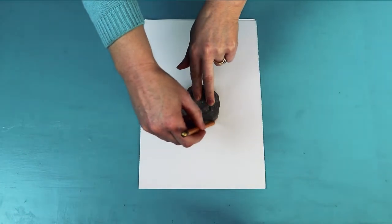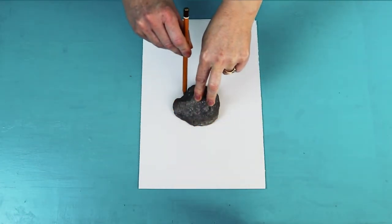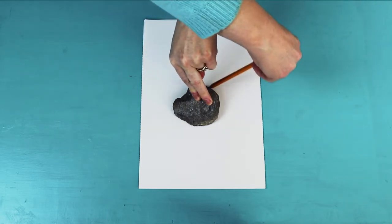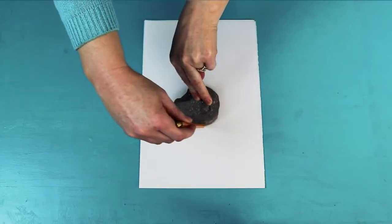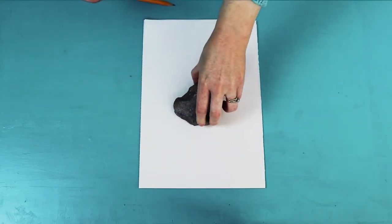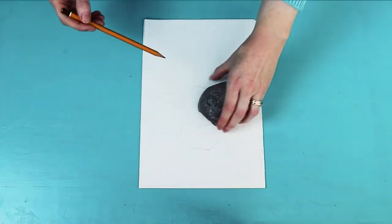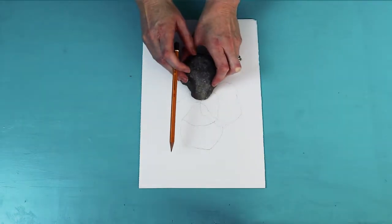Place the rock in the centre of the page and trace around it. Then move the rock and trace it again, making sure it intersects the first drawing and repeat three more times, or as many times as you want.